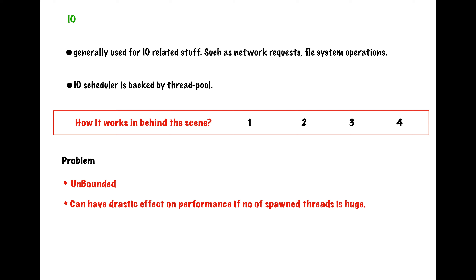So you should not always ask for Schedulers.io indiscriminately. You should think: has the previous job actually completed before asking for another thread? If you have multiple jobs running and everywhere you ask Schedulers.io for a thread, it will keep spawning new threads. To handle this, there is a rule already in place in the IO thread pool: every time a thread given by IO is inactive for 60 seconds, it will remove that unused thread. With those rules and regulations, IO regularizes its thread pool.